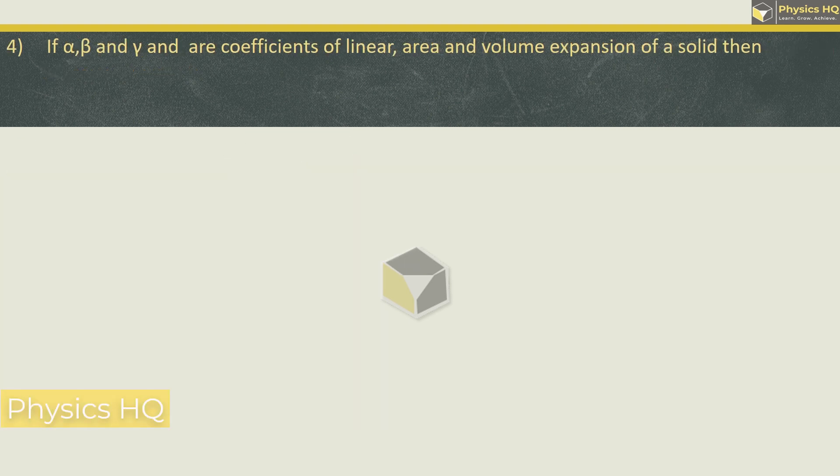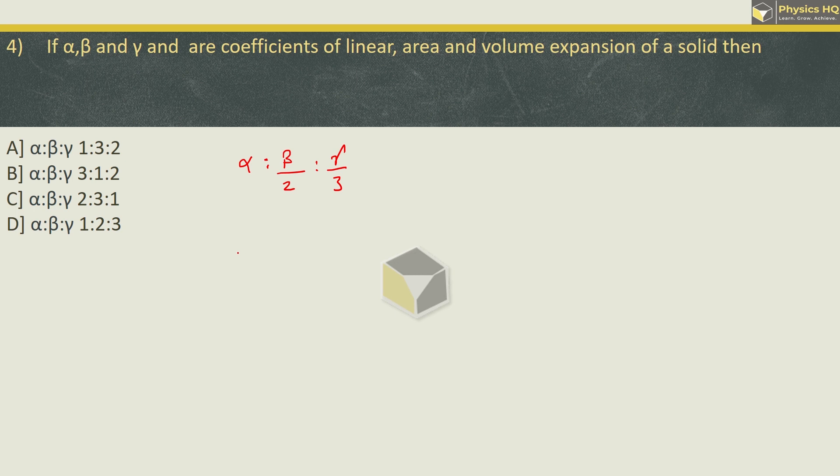Next MCQ: If α, β and γ are coefficients of linear, aerial and volume expansion of a solid, then the ratio of α, β and γ is how much? Let me tell you the relation between α, β and γ is given by α : β/2 : γ/3. They have asked us what will be α : β : γ. So this will come out to be equal to 1 : 2 : 3 from this relation. This says that β is 2 times α and γ is 3 times α. So the correct option is option D. Remember this relation.